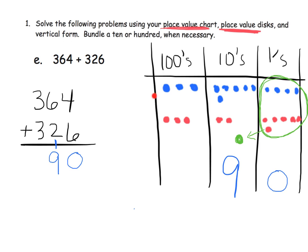Over here in the vertical form, we have 6 plus 2 plus 1, that's 9. So we're going to write down 9 — 9 tens — because we had 6 tens plus 2 tens plus 1 ten equals 9 tens. Then looking at the hundreds column, we have 3 plus another 3, which gives us 600 altogether. So 300 plus 300 gives us 600. That's how we show how the place value disks relate to the standard algorithm.